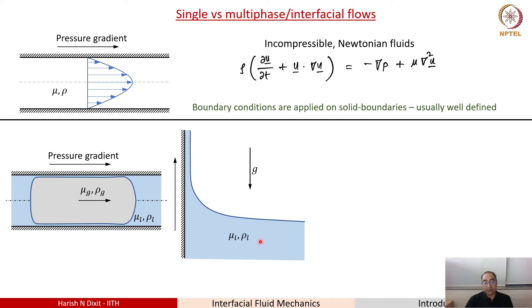Now in these cases, we again will be assuming that the equations that govern fluid flow are incompressible Newtonian fluids, but now we have two fluids and therefore we will have to write down separate equations for the gas which is again Navier-Stokes equations for the gas and Navier-Stokes equations for the liquid.